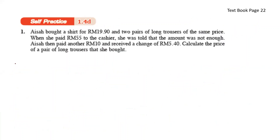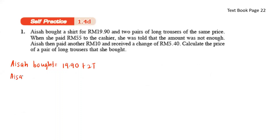Word problem G: Aisha bought a shirt for RM19.90 and two pairs of long trousers at the same price. She paid RM55 to the cashier but was told it was not enough, so she paid another RM10, giving a total of RM65, and received change of RM5.40.